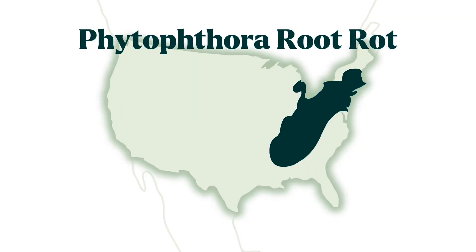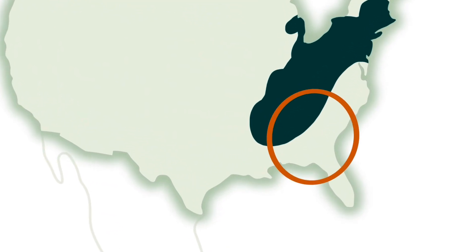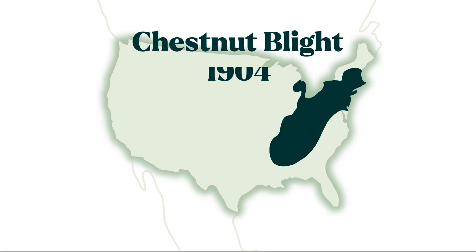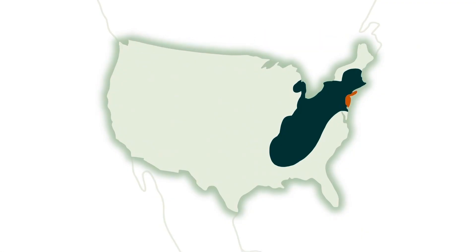One disease, called Phytophthora root rot, or PRR, started killing trees in the south. Another, called chestnut blight, was discovered in 1904 and started killing trees in the north.